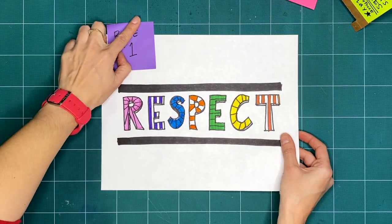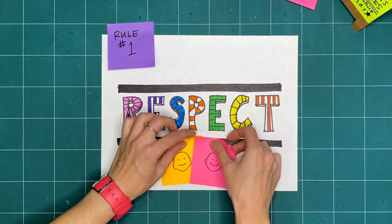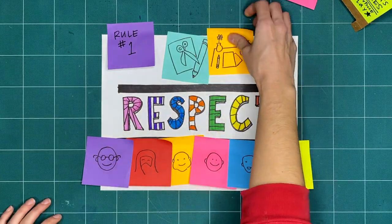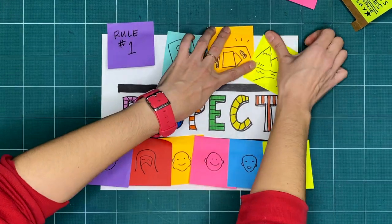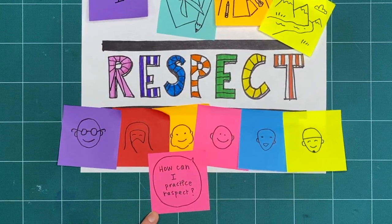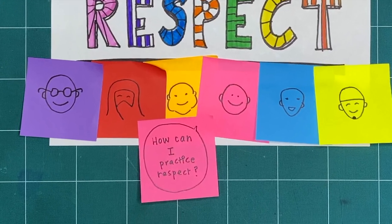Rule 1 is respect. We want to respect ourselves, anyone we're making with, our tools and making space, and the lands and waterways where we're making. How can you practice respect when you explore, play, and make?